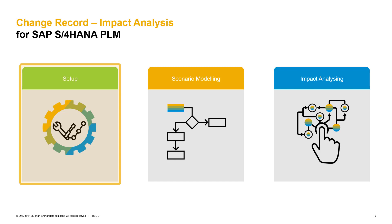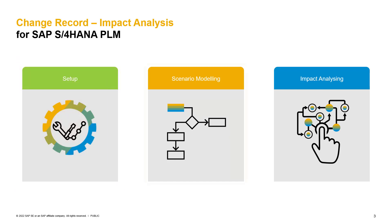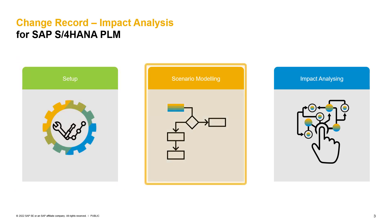In addition, we also need to maintain per change record type which impact analysis model is used per change object. This can only be done after we have our impact models available. This brings us to our next point: the scenario modeling.